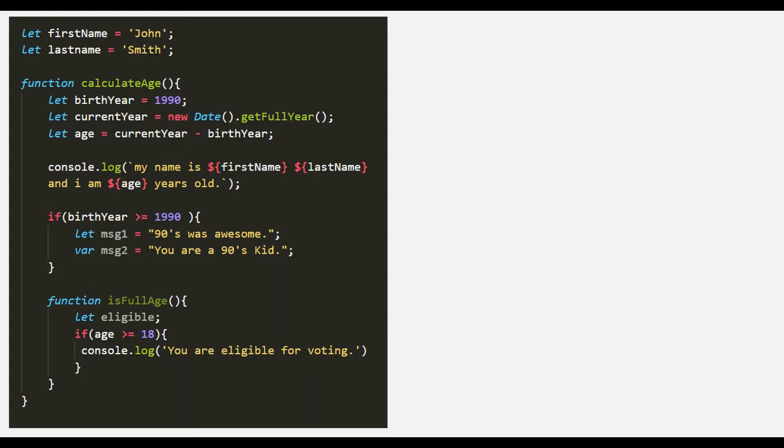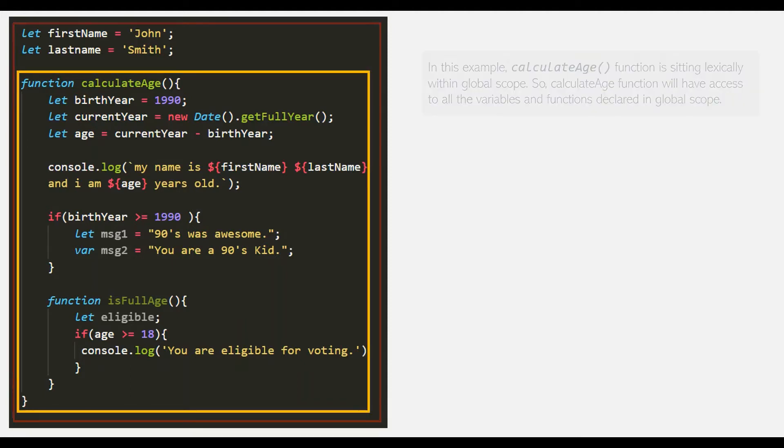In the last lecture, we learned about lexical scoping and what is scope chain. We learned that any function or code block sitting lexically within another scope automatically has access to the variables and functions declared in the outer scope. For example, in this program, the calculateH function is sitting lexically within the global scope, so it has access to all the variables and functions declared in the global scope like firstName and lastName.